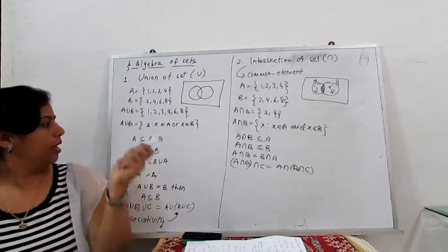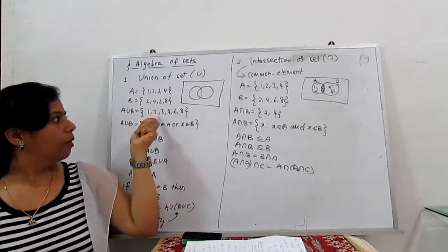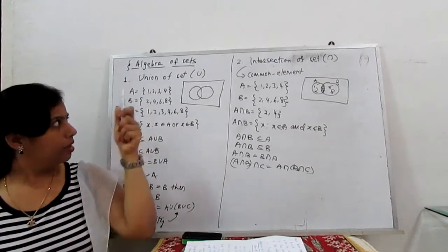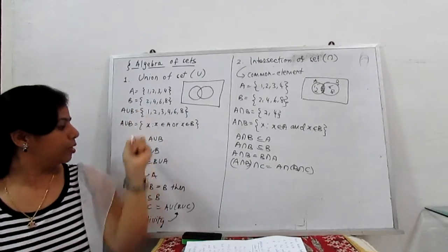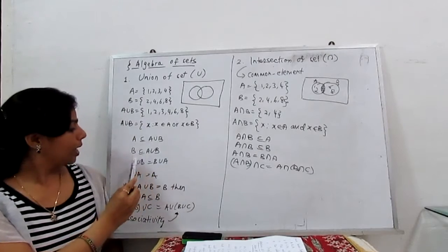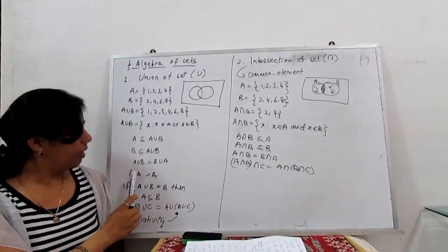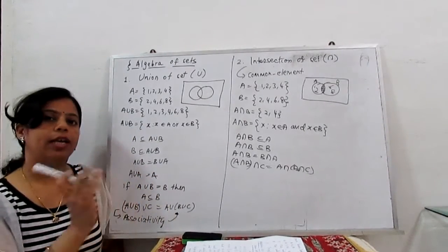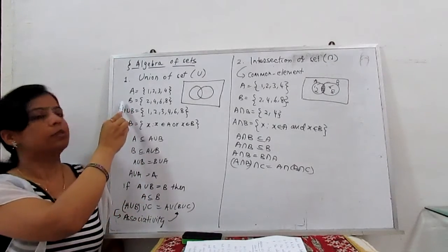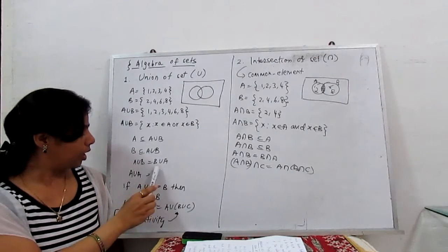Definitely, A is always a subset of A union B, because all the elements of A are there. Similarly, B is also a subset of A union B. Also, A union A is always equal to A — union with the same set gives the same set.